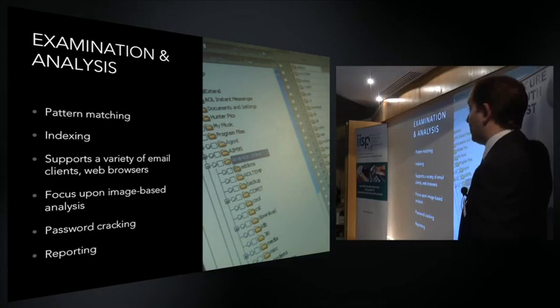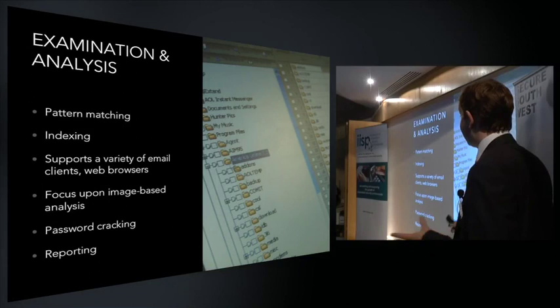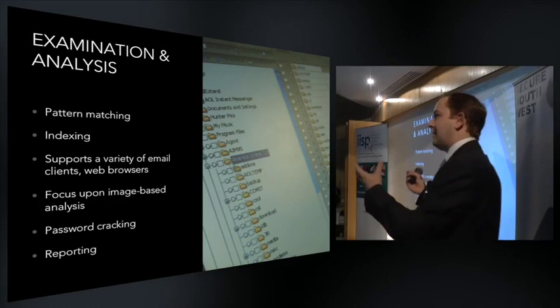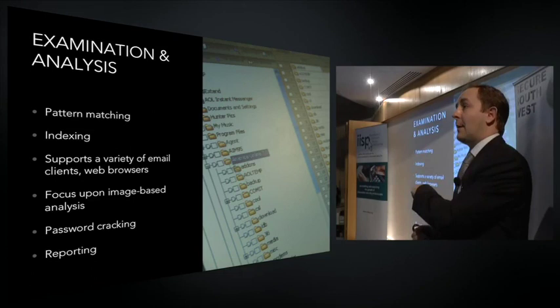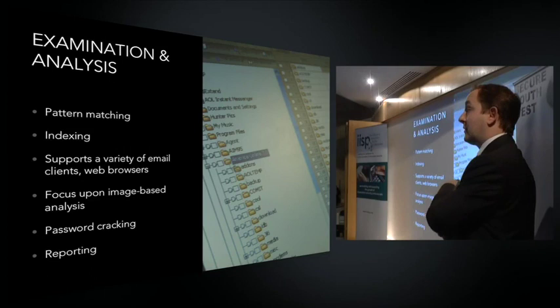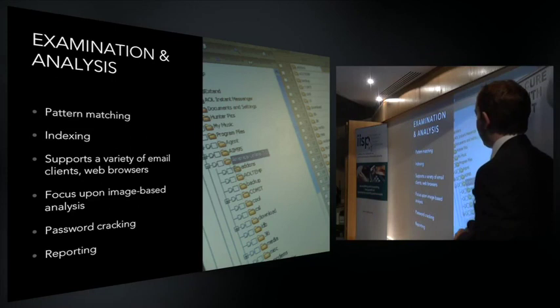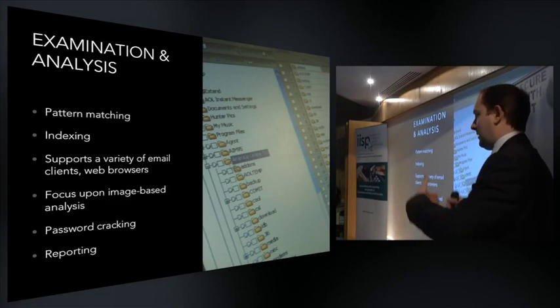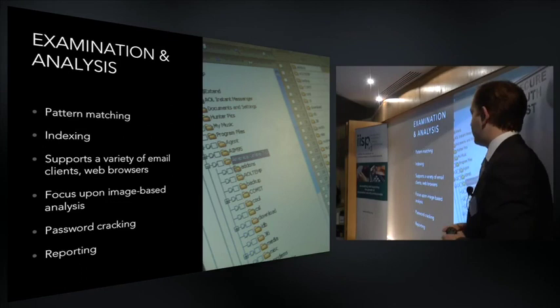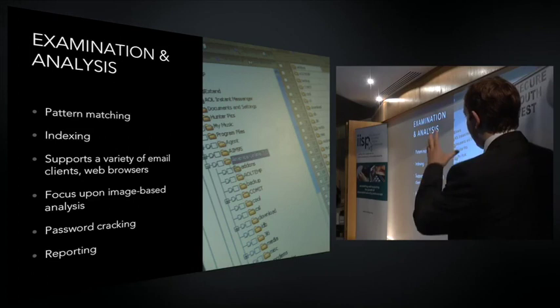Forensic processes also do a variety of other things for us: pattern matching — credit cards and other information, any pattern you could think of, the system can find it immediately. There's also been a change in the methodology of how analysis software works. Previously you'd put in search terms, click go, then go off for a cup of tea and perhaps come back the following morning for results. Both main commercial providers now do pre-indexing and pre-processing upfront — you still come back the following day, but you get one set of results, and with indexing you no longer have to keep doing repeated searches for keywords because they come up immediately from a database of indexed terms.